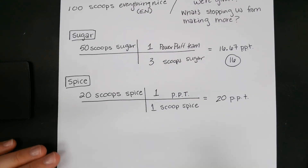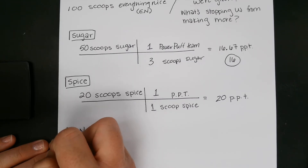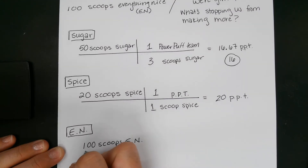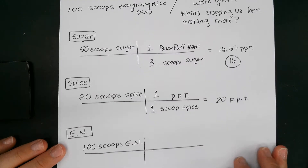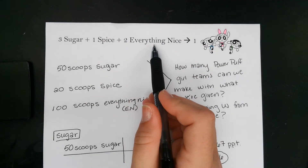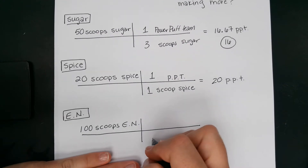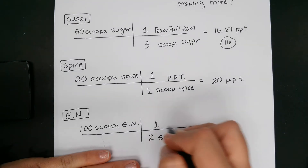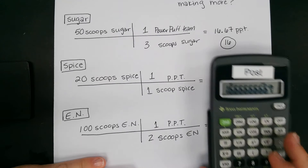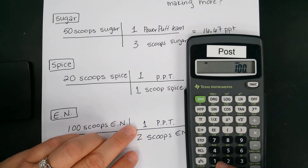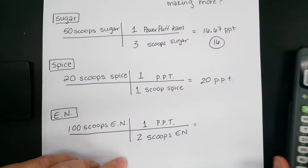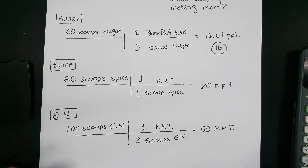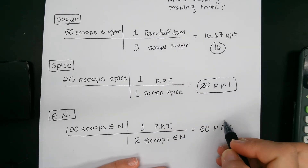Our last ingredient: we have 100 scoops of everything nice, abbreviated EN. We convert it — checking our equation, it says there are two scoops of everything nice for every one Powerpuff team. So we say 100 times 1 divided by 2, and we get 50 Powerpuff teams.